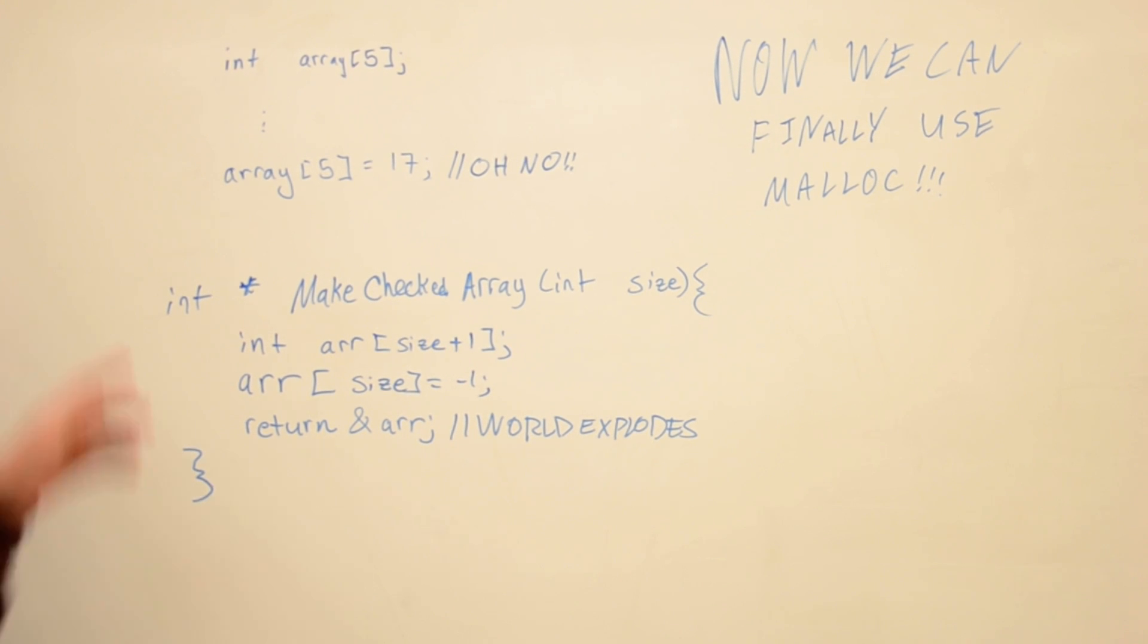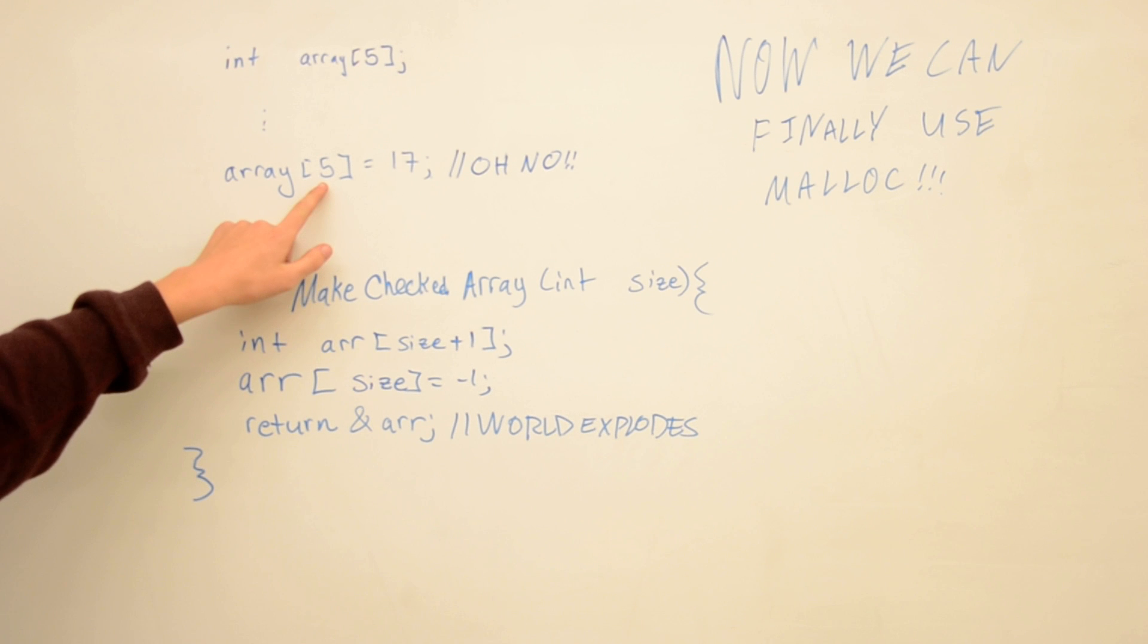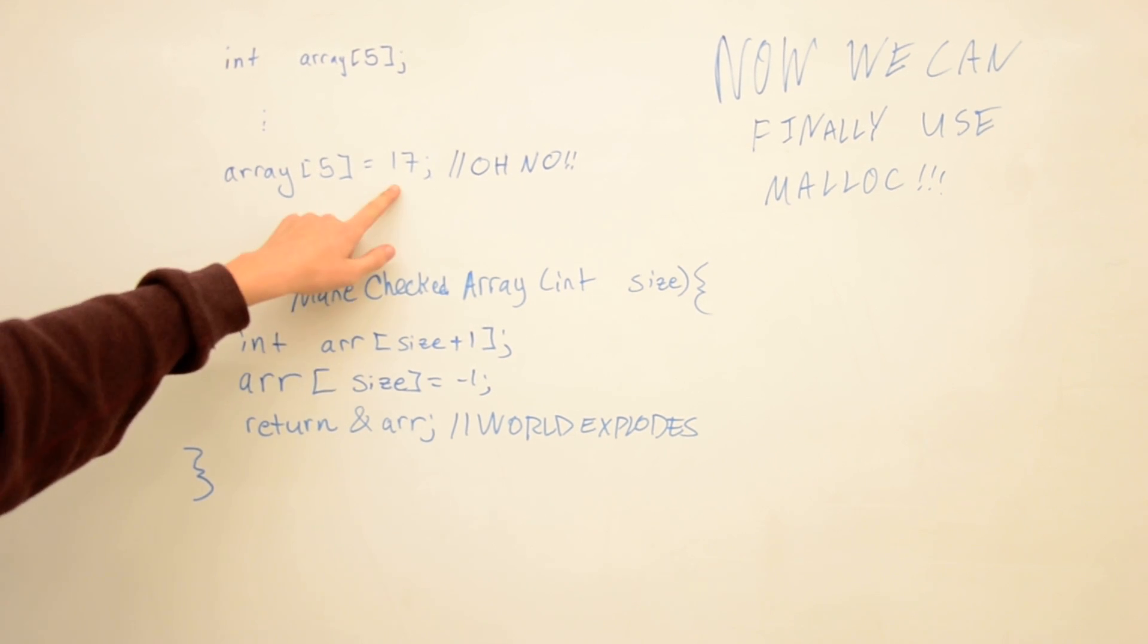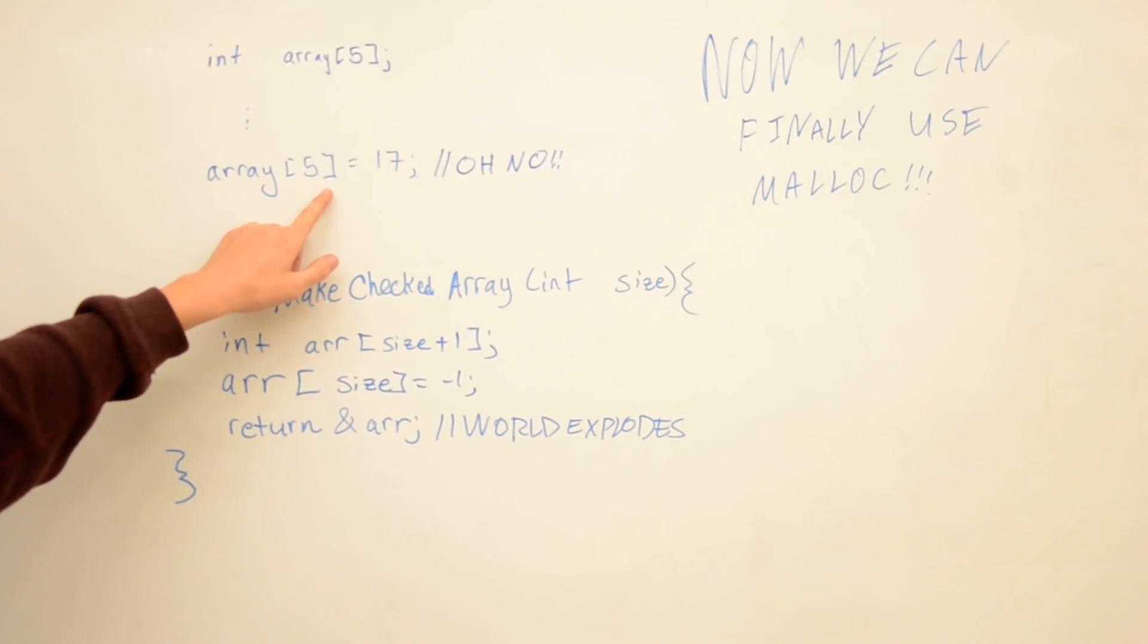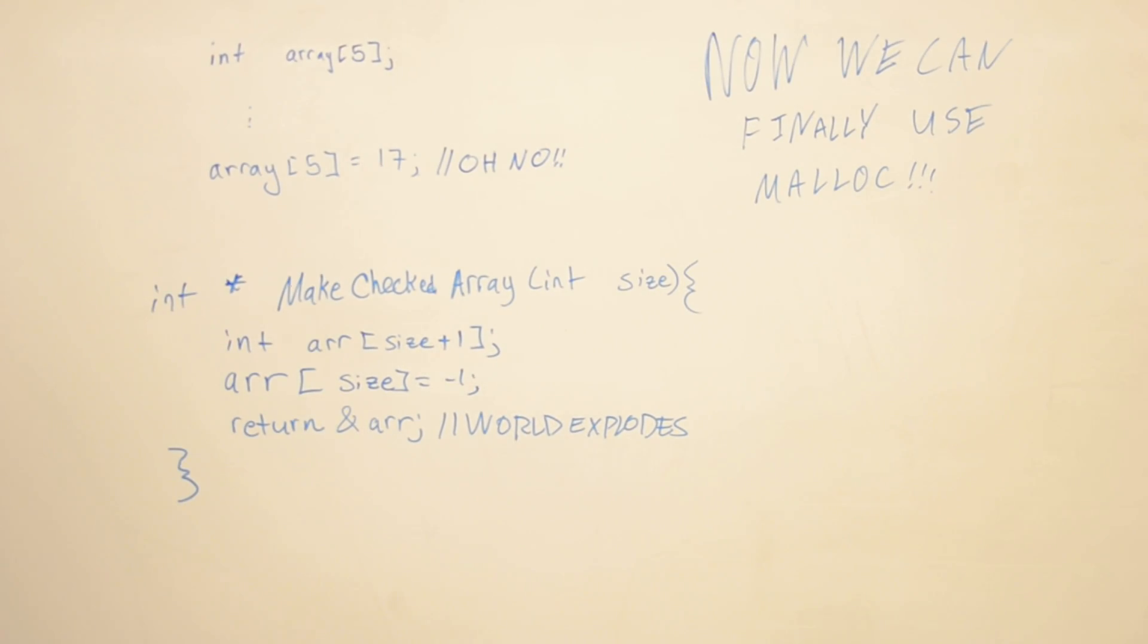Say in C we're using an array, and then sometime later we try to access one past the bounds of the array and set it to something. Now this won't cause a problem every time, but it does something even worse, which is cause a problem at random times.